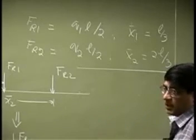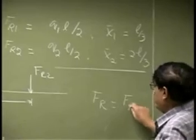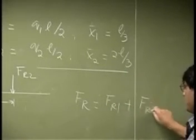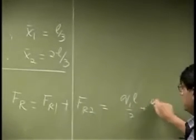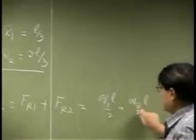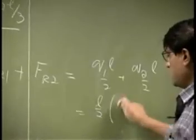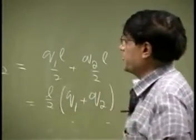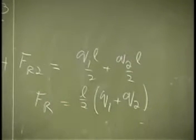If you want to go from here to here, your FR is going to be FR1 plus FR2. So, we get Q1 L over 2 plus Q2 L over 2. And the whole thing simply becomes L over 2 times Q1 plus Q2. So, that is what we have as the resultant force.